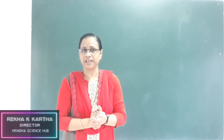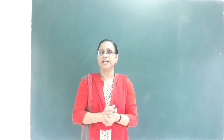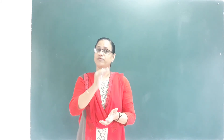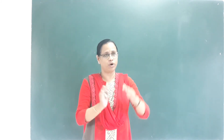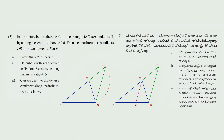In this chapter, we are going to take the last topic. We are going to do the fifth question. In the picture below, the side AC of the triangle is extended to D by adding the length of the side CB. Then the line through C parallel to DB is drawn to meet AB at E.